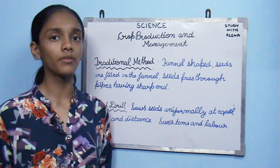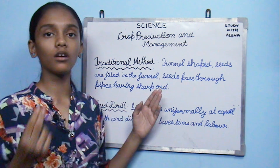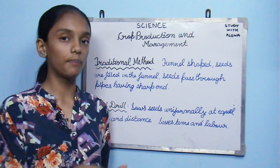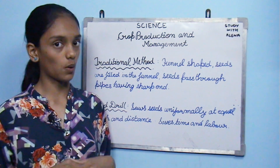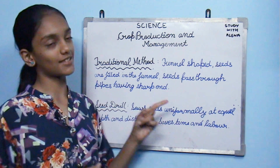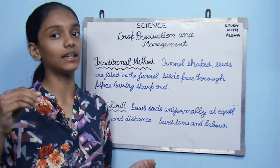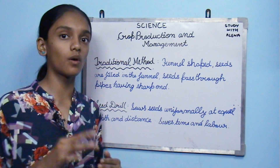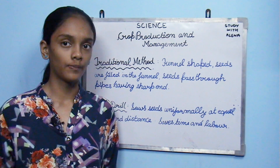In the traditional method, a funnel-shaped tool is used. Seeds are poured into the funnel and pass through long pipes with sharp ends that pierce the soil. It is operated by bulls and requires labor, making it less efficient. The modern method uses a seed drill run by a tractor. It sows seeds at equal distance and depth and covers the soil after sowing, ensuring seeds are not eaten by birds.